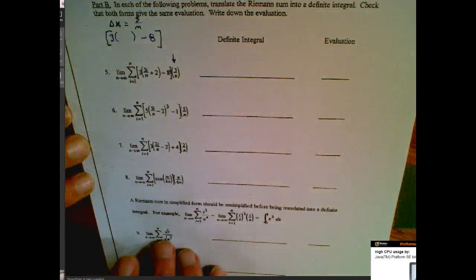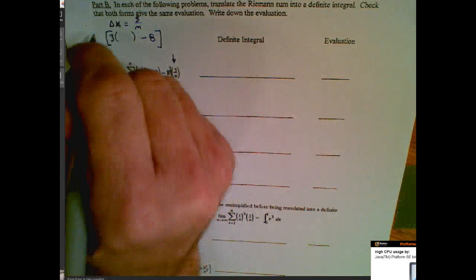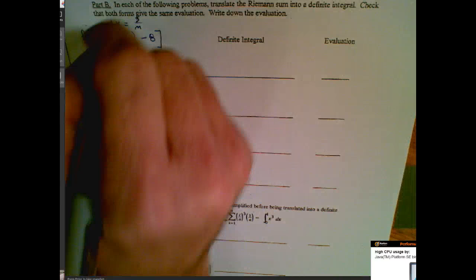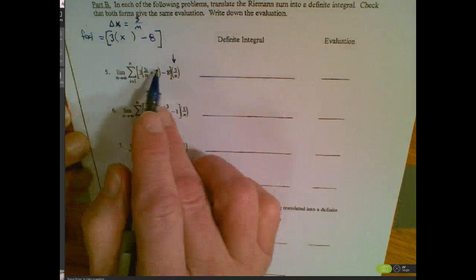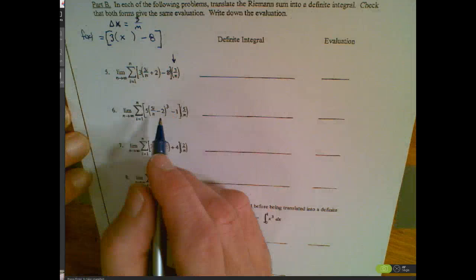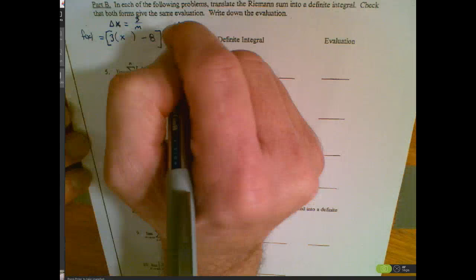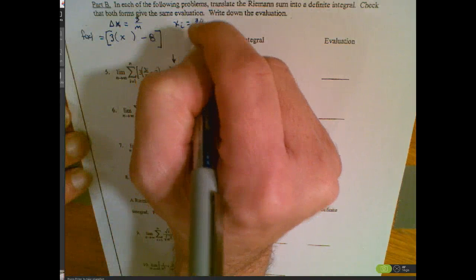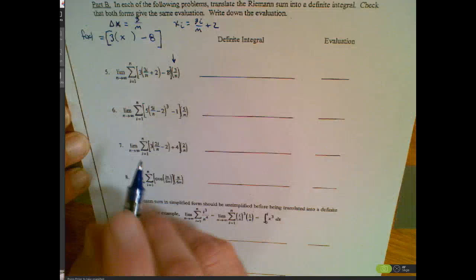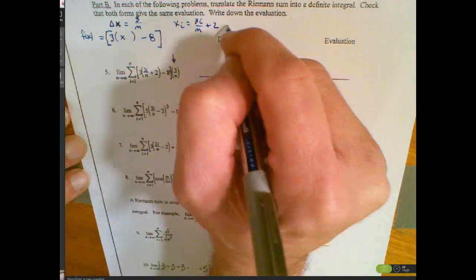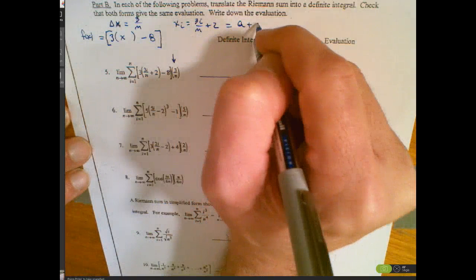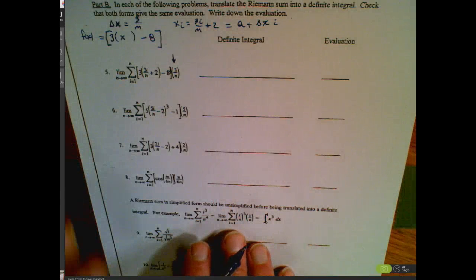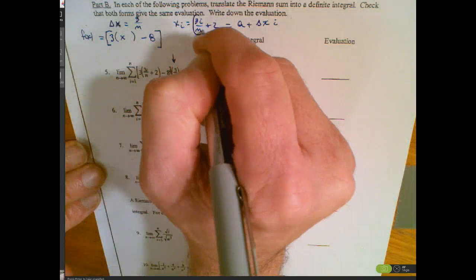I'm going to write it like this — I think my rule is f(x) = 3x - 8. Looking inside, I try x sub i = 3i/n + 2. I know from building these that I'm looking for the form a + delta x times i. I can find delta x in there as 3 over n.